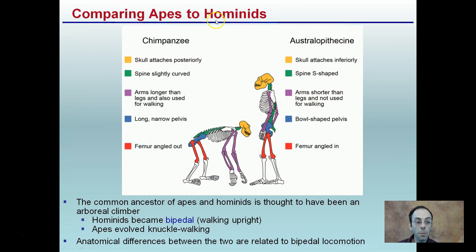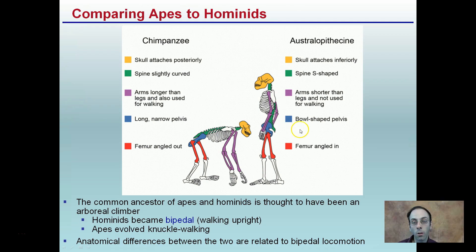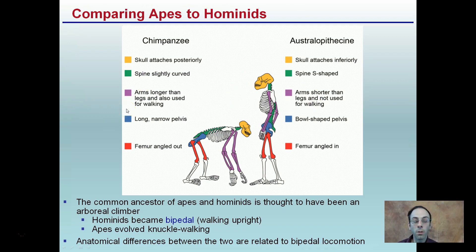Comparing apes to hominids, you can see similar structures highlighted in the same colors, but there are also distinct differences. The femur in apes is angled out, whereas in humans it's angled in. Our pelvis is bowl-shaped, while for chimpanzees it is long and narrow. You can see some of these comparisons illustrated here.